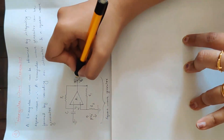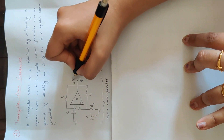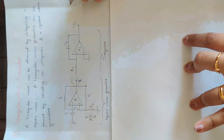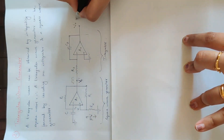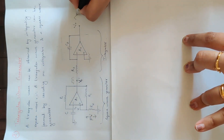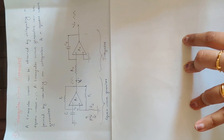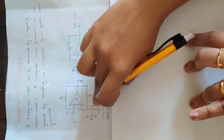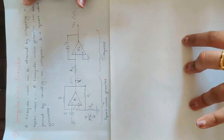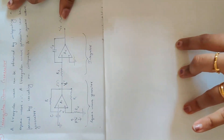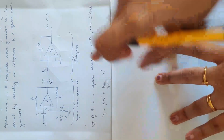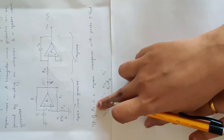Now we will look at the square wave generator. The integrator input is the output of op-amp A1. Now we will learn the output of A1.